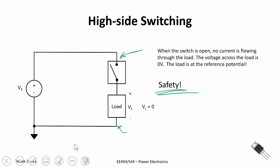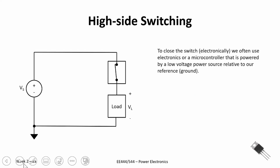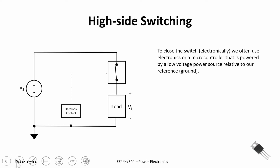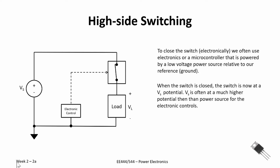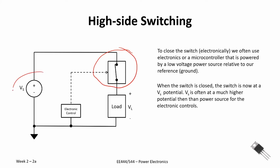There is a downside to high side switching. When we close the switch on a high side, we're usually using some form of microcontroller or smaller voltage electronics — a low voltage electronic — to control that switch. When we close that switch, you'll notice it is now referenced to our high side voltage, which could be on the order of hundreds, perhaps even thousands of volts. Yet we're using electronic control that is on the order of 3.3 or 5.0 volts, and is often referenced to our ground potential. So with the switch closed, our switch is at a much higher voltage.